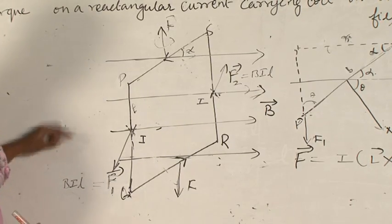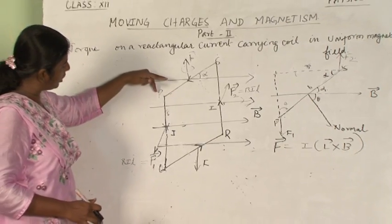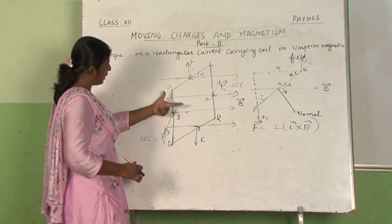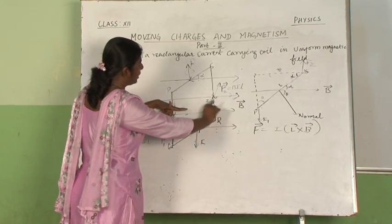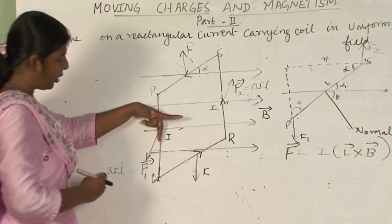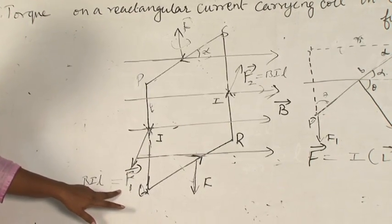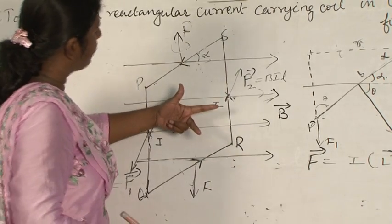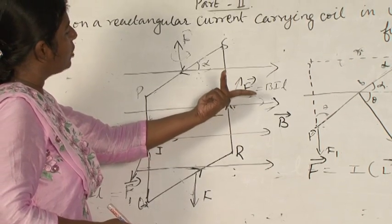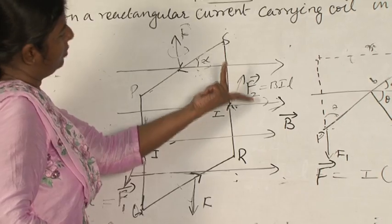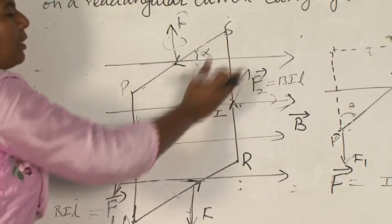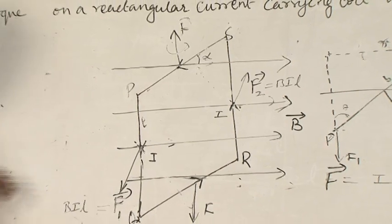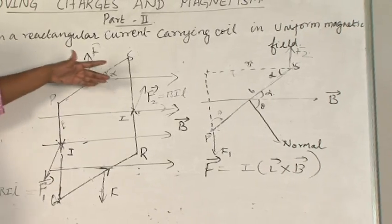Apply Fleming's left hand rule for the segment P to Q. Current is flowing from P to Q in this direction. Keep your fingers accordingly — this is the current flowing and here is your magnetic field — and the force F is going outwards. So F1 is the force acting outwards on segment PQ. Now come to segment R to S and again apply Fleming's left hand rule. Here is your magnetic field, the current is flowing upward, and your force is acting outward. So F2 is equal to B·I·L. F1 and F2 are equal and opposite in direction.